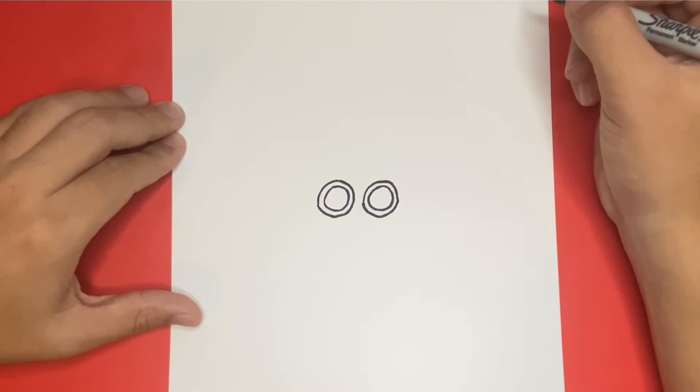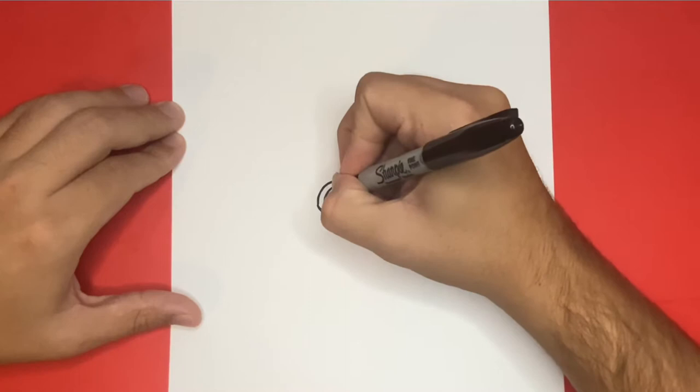Fantastic! For the next step, let's go ahead and draw two smaller circles on the inside of the first ones that we drew to make the pupils.